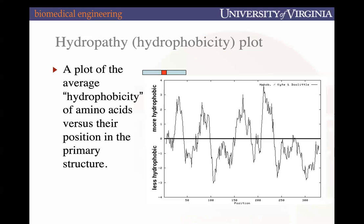Looking at this hydropathy plot, how many transmembrane portions does this protein have? Four — each full peak going up to the hydrophobic maximum and back down represents one pass across the membrane. After the fourth pass, the plot stays in the more hydrophilic region, meaning the C-terminus is on the intracellular portion of the cell. This protein is tetraspanin.